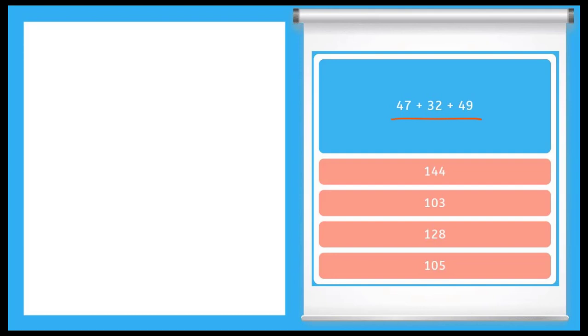So I'm going to write them over here on the left and be sure to line up my place value. This is very important here. So I have 47, 32, and 49.